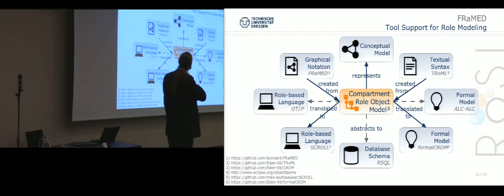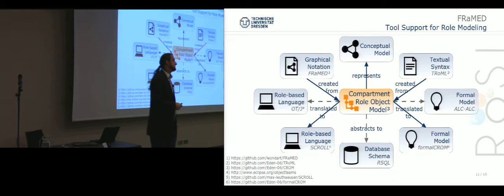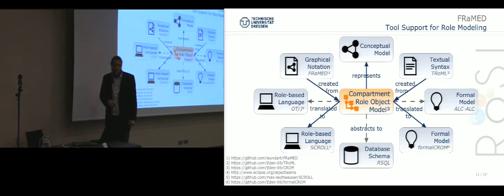We not just have the graphical frontend for this metamodel but also a textual syntax built in the tool Xtext. Currently what perfectly runs is the translation to the role-based language Scroll and the formal language CROM. We are currently working on representation into a description logic, ALC—this is a special kind of description logic developed within our group. And we also can generate a data definition description that can be passed to a role-based database that is also developed within our group.